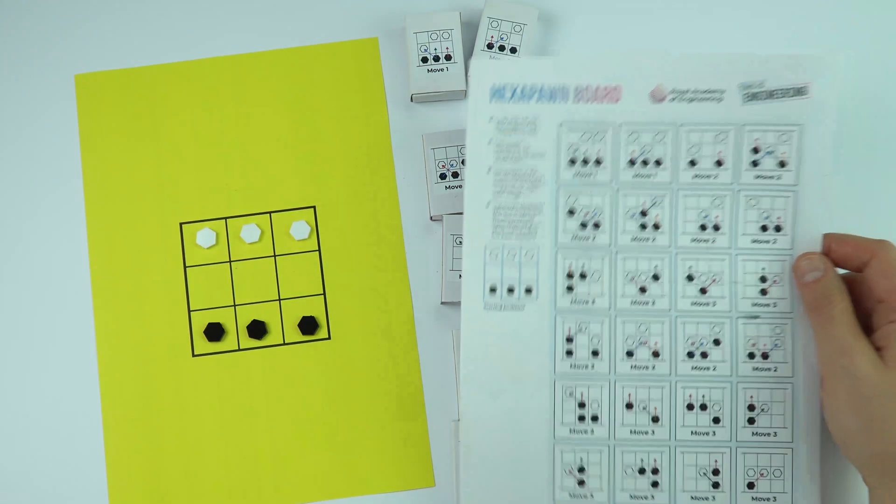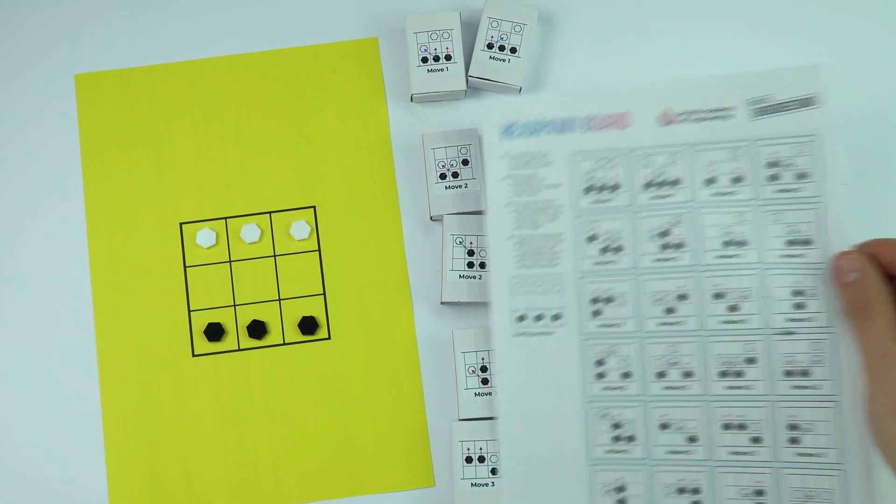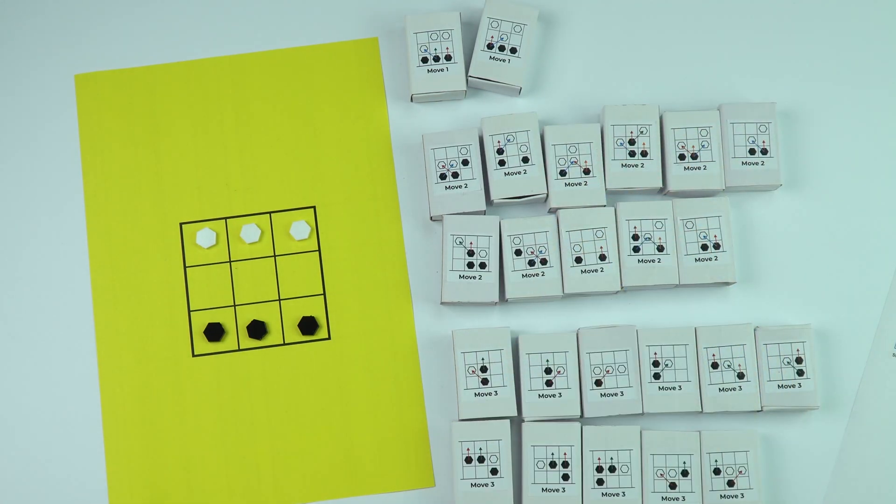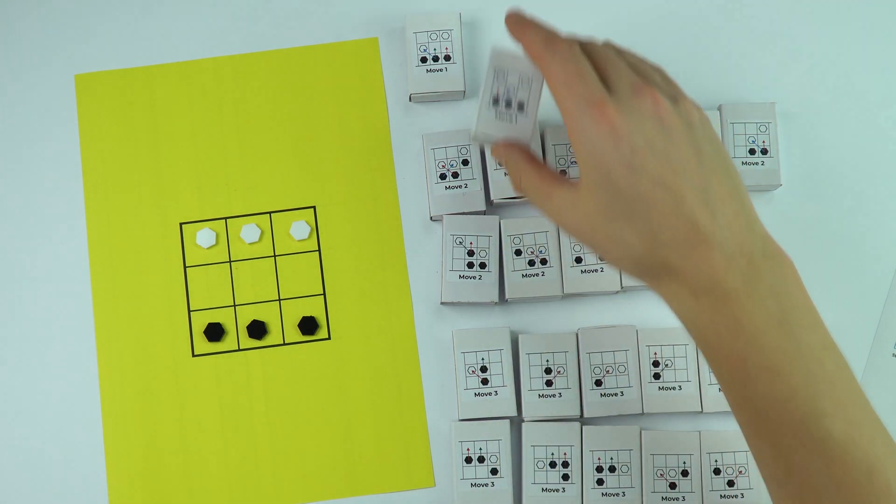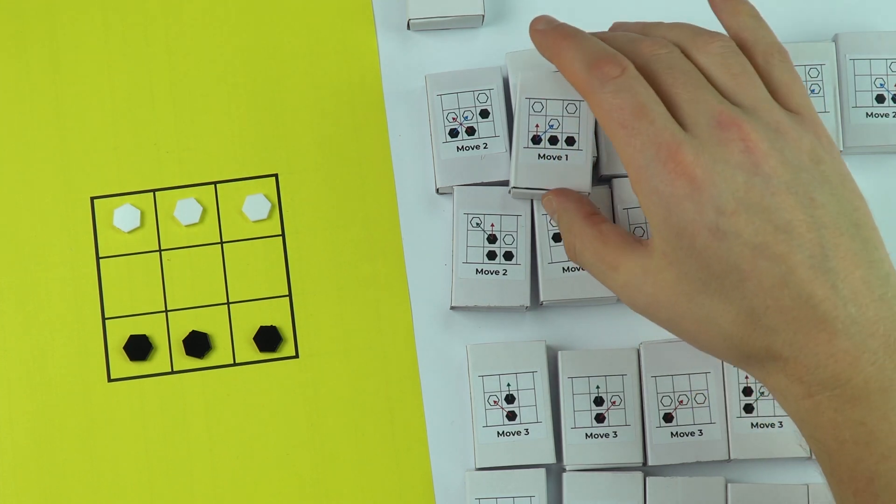What I've done is I've taken this, printed it out, and then stuck it onto a load of empty match boxes. You'll notice on the front of each one there are arrows in different colors.